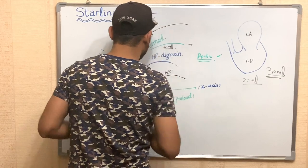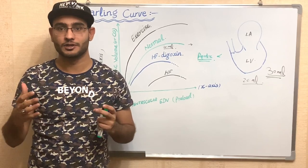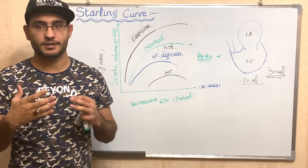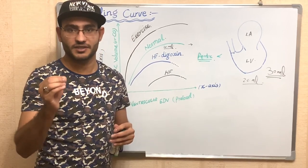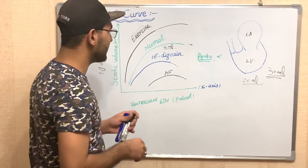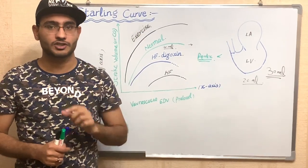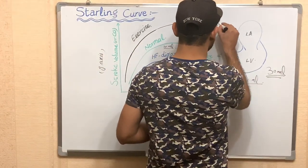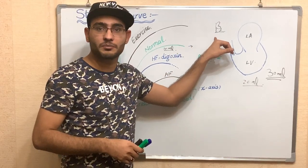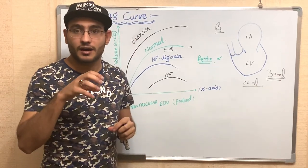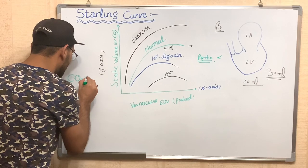When a person does exercise, the demand for oxygen and blood increases in the tissues, so we need more oxygen, blood, and nutrients. For this purpose, the sympathetic nervous system becomes active. The sympathetic nervous system affects the vessels and the heart. There are specific receptors present on the heart known as beta-1 receptors. The sympathetic nervous system stimulates these beta-1 receptors.